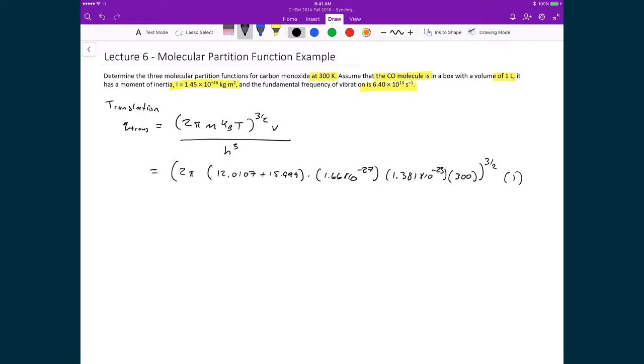All of this is raised to the power of 3 halves. Multiply that by the volume, which is equal to 1. And we'll divide this by Planck's constant, 6.626 times 10 to the minus 34, raised to the power of 3.